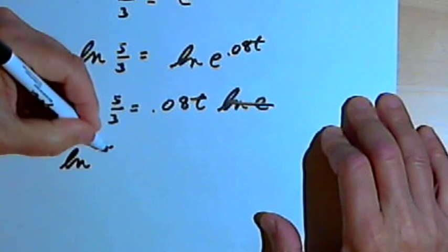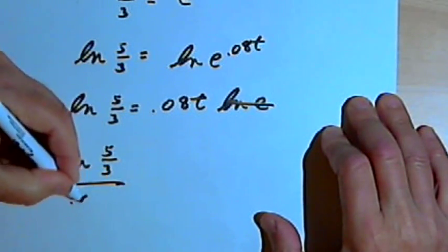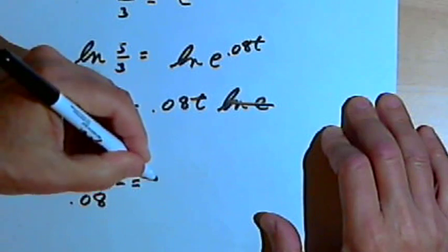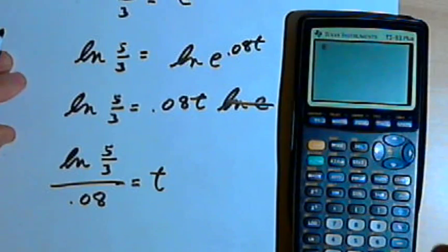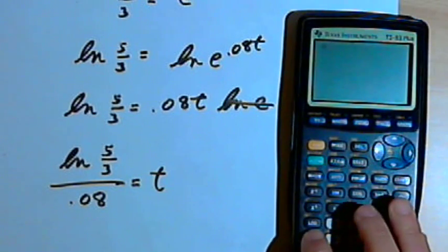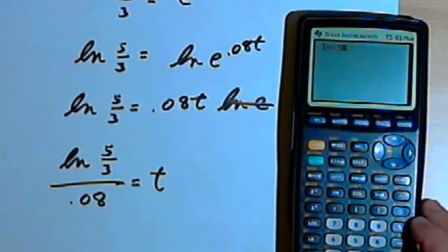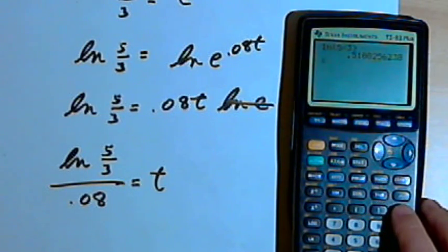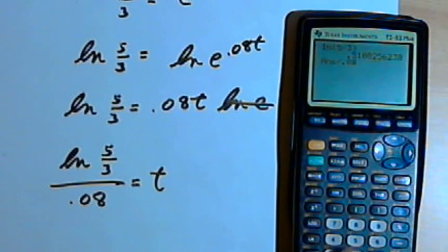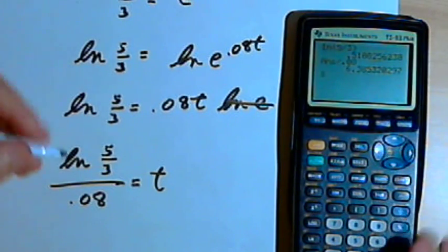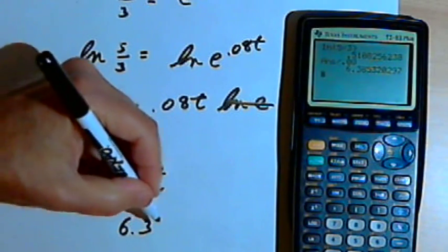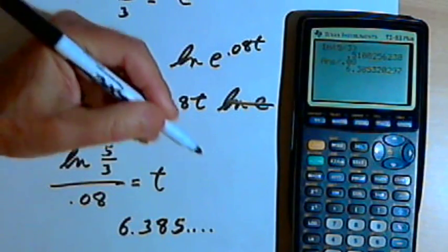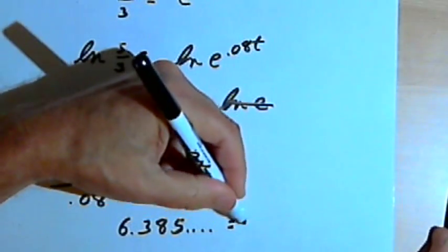So the natural log of 5 thirds divided by 0.08 will be equal to the time. In the calculator, I'll find the natural log of 5 divided by 3. And once I've got that, I'll divide that by 0.08. And I'm going to get 6.385. That number keeps going. And that equals time.